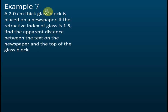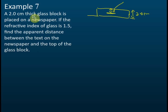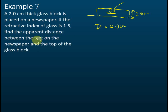Example 7: A glass block has a thickness of 2.0 cm and is placed on a newspaper. The observer finds that the newspaper appears to be a little higher than its actual position. The thickness of the glass block is the real depth, so D equals 2.0 cm. If the refractive index of glass is 1.5, find the apparent distance between the text on the newspaper and the top of the glass.